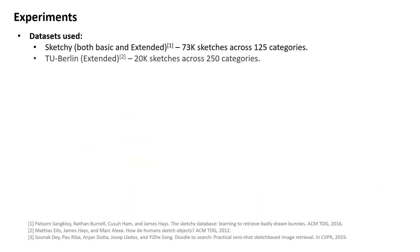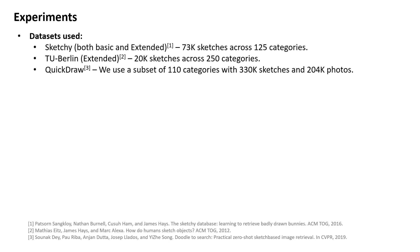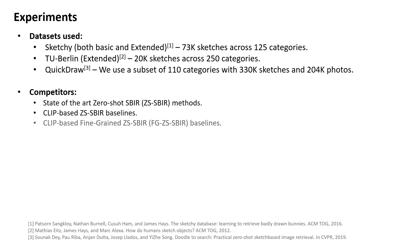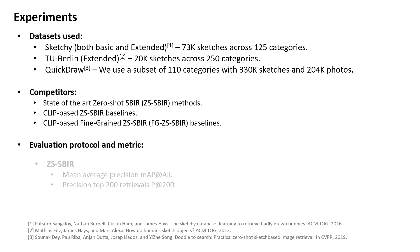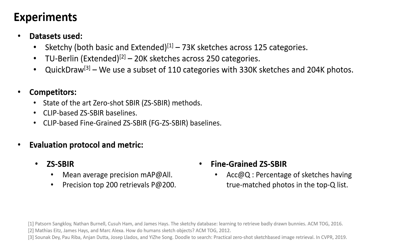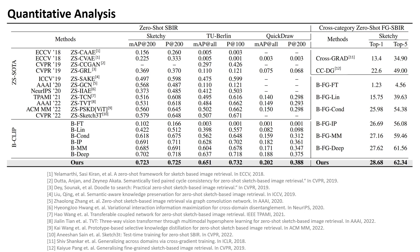We evaluate on the popular Sketchy, TU-Berlin, and QuickDraw datasets, which are large collections of photo-sketch pairs for ZS-SBIR, and on Sketchy for the fine-grained SBIR task. We compare our method against state-of-the-art zero-shot SBIR methods, and also design a few foundation model-based baselines in the context of SBIR and zero-shot FG-SBIR for a fairer evaluation. For ZS-SBIR, performance is measured using mean average precision and precision across the top 200 retrievals, while for fine-grained retrieval we use the top-Q rank metric, reporting top-1 and top-5 results.